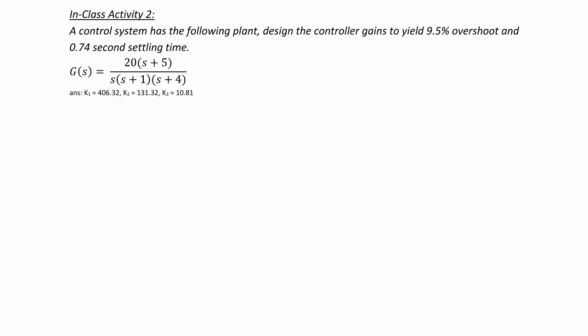In class activity two, a control system has the following plant. Design the controller gains to yield a 9.5% overshoot and a 0.74 second settling time.